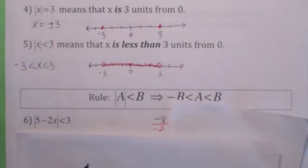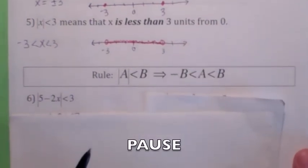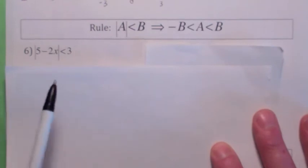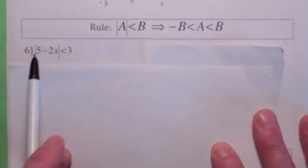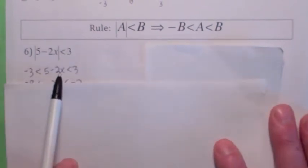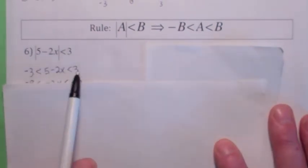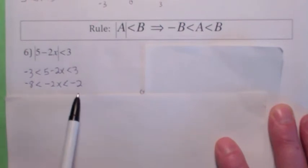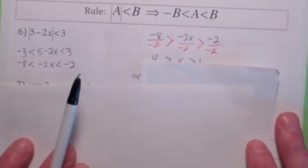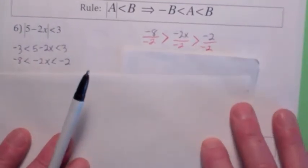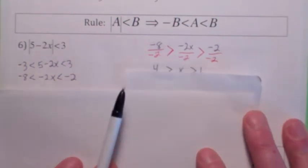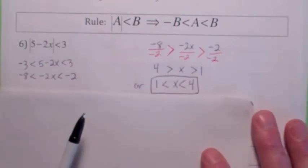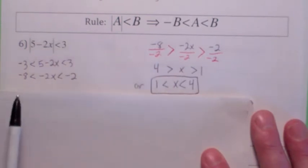So try this one — see if you can solve this absolute value inequality. Since the absolute value is less than 3, that means what's inside the absolute value bars, 5 minus 2x, has to be between negative 3 and 3. That's what the rule says. Then to solve it, you would subtract 5 from all three things. And when you divide by negative 2, remember you change the direction of the inequality symbol. So you get 4 is greater than x is greater than 1. Or you could write it as 1 is less than x is less than 4. There are two ways to write the inequality.